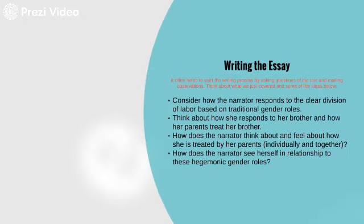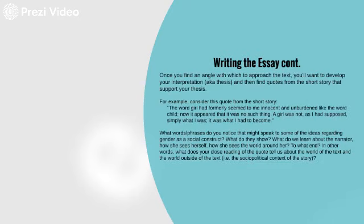When we look at our short story, we need to consider the concepts we just talked about and look at how our narrator engages with the individuals in her world. How does the narrator respond to the clear division of labor? How she responds to her brother, for example, and how her parents treat her brother differently? How does the narrator think about and feel about how she's treated by her parents, whether individually or as a parental unit? And how does she see herself in relationship to hegemonic or traditional gender roles? I've provided a quote from the story that offers a very clear representation of how she starts to perceive her relationship to gender and those traditional gender roles.